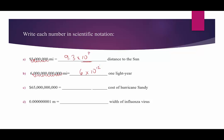How about letter C? The cost of Hurricane Sandy was $65 billion. How would we write this in scientific notation? Well, let's see. We're going to move it 1, 2, 3, 4, 5, 6, 7, 8, 9. That's 65. There we go. So 6.5 times 10 to the 10th.